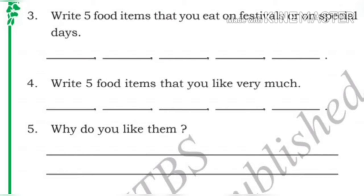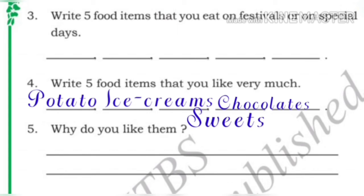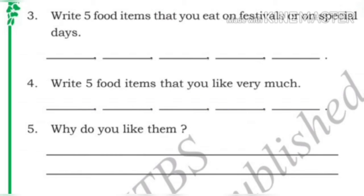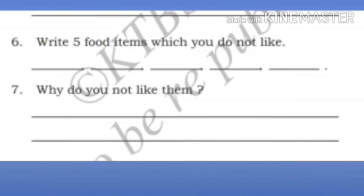Next question: write the five food items that you like very much — potato, ice creams, chocolates, sweets, and chips. And next question: why do you like them? I like them as they are very tasty to eat.